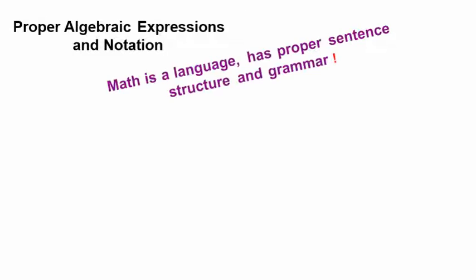Next slide. A biggie is proper algebraic expressions and notation. Math is a language, and you're manipulating symbols and numbers, so it's pretty much like English. You've got to have a proper sentence structure and a proper grammar. So, for example, if I say 5 divided by 8 is, or 5 eighths is, some amount out of 10, out of 16.